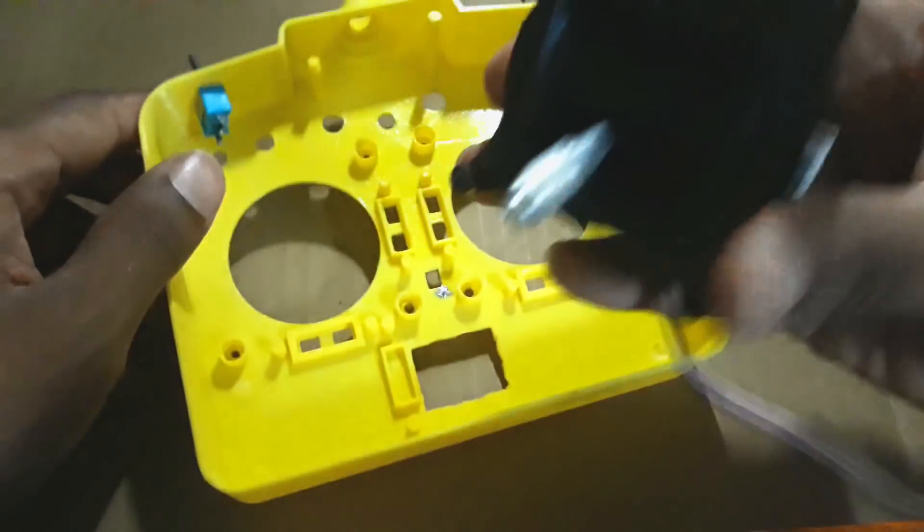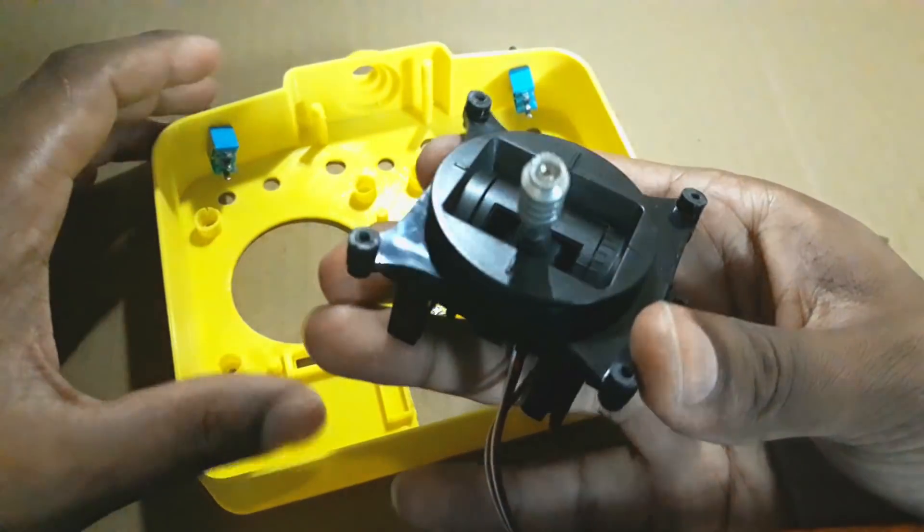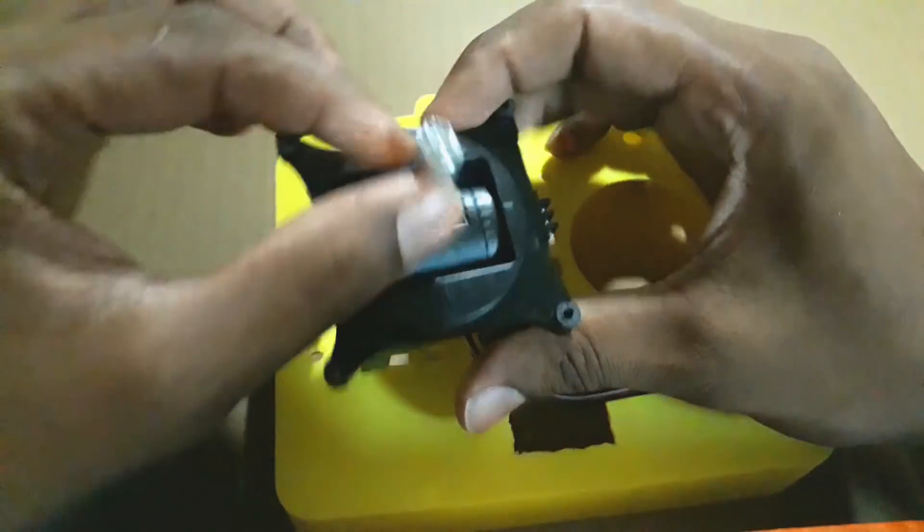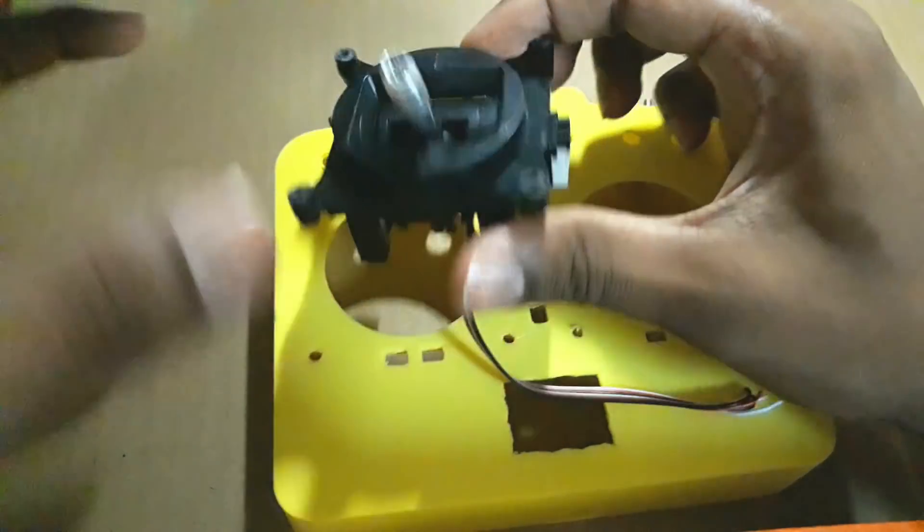Now I will be adding the joysticks. This one is for the throttle, so I will add it to the left side of the transmitter body because I am a right-handed person.